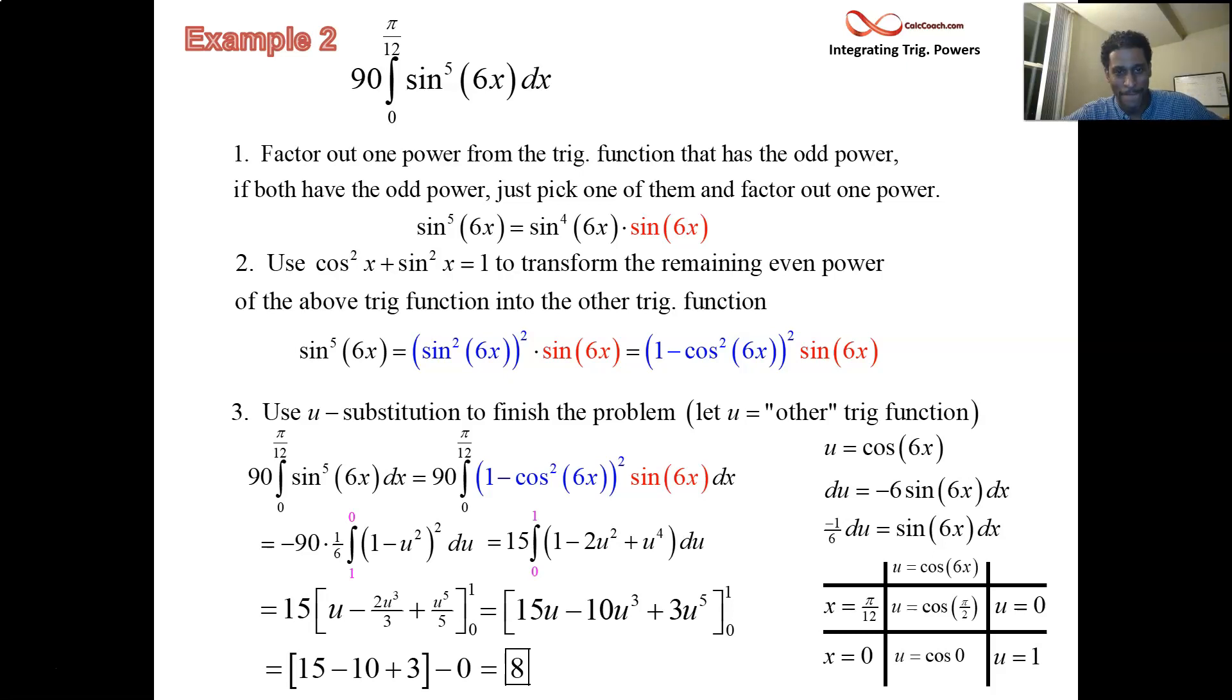So we've seen two examples. Both of them have an odd power present. Factor out one of the powers. Trade the remaining even powers in using Pythagorean trig identity sine squared plus cosine squared equals 1. Do a u-sub and it becomes a polynomial integral. So when there's an odd power present, this is how you behave to solve the problem. When there's not an odd power present, then we're on to the next video for that.